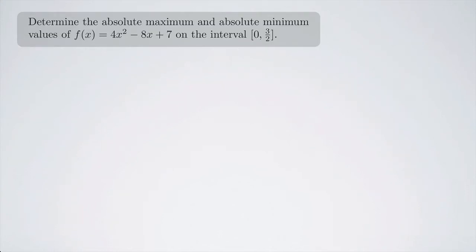Determine the absolute maximum and absolute minimum values of f(x) = 4x² - 8x + 7 on the closed interval 0 to 3/2.